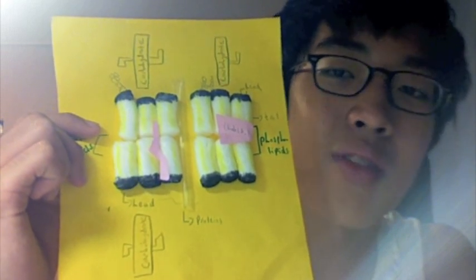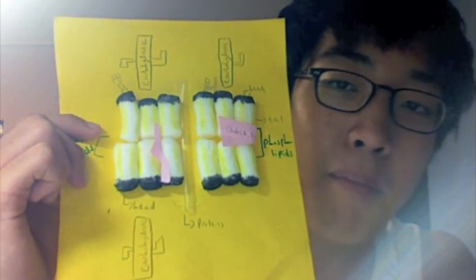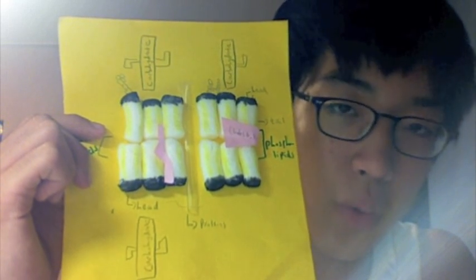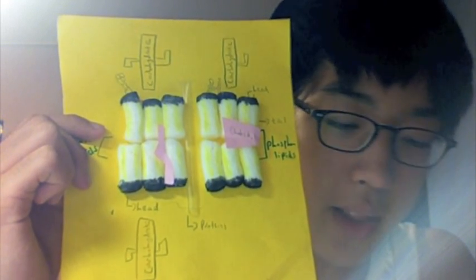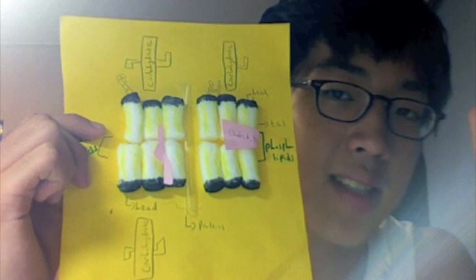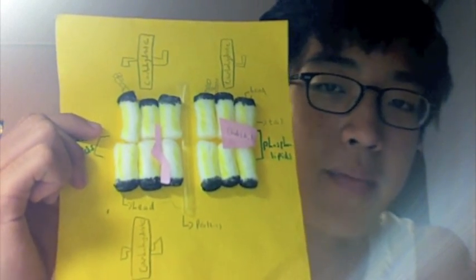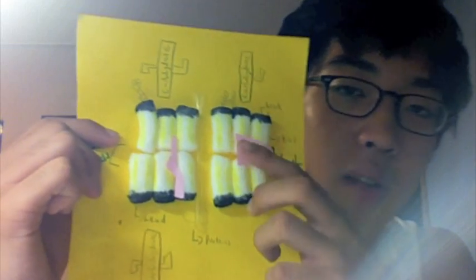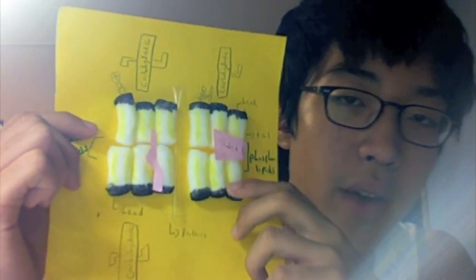First is a charged phosphate group, second is glycerol, and third, it contains two fatty acid chains. Now, phospholipids have two parts: one is the head and one is the tail. If you see the black thing, this is the head.